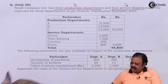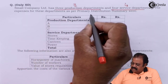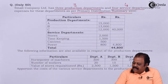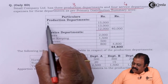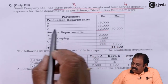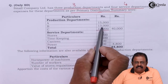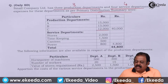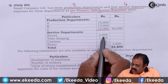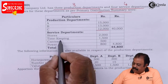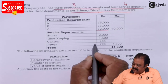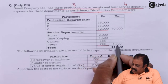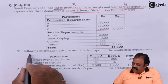A small company limited has three production departments and four service departments. The expenses as per primary distribution summary: production department A 15,000, B 13,000, C 12,000 — total overheads 40,000. Service departments: stores 2,000, timekeeping 1,500, canteen 500, power 800 — total 4,800.